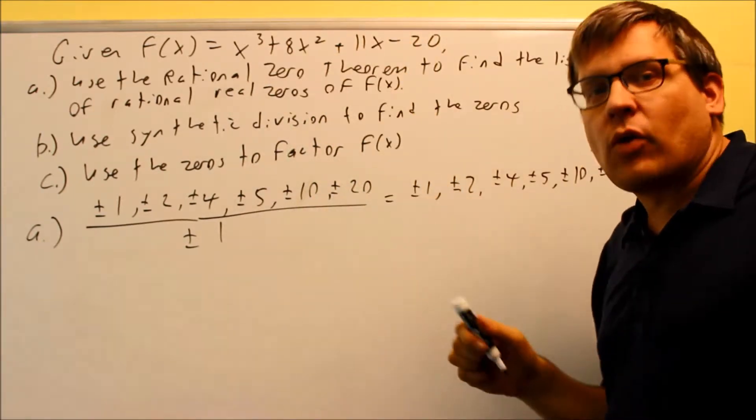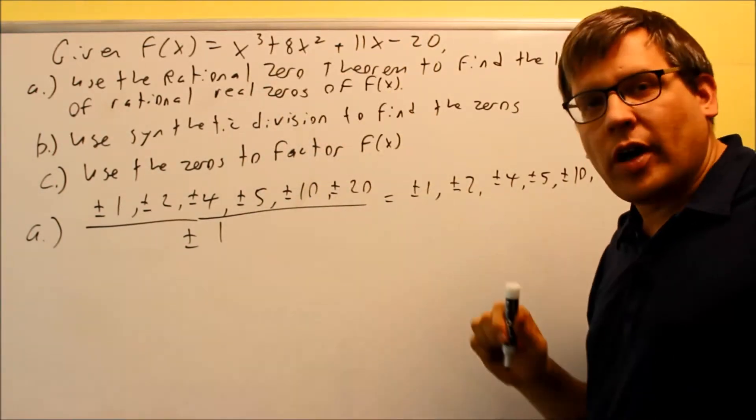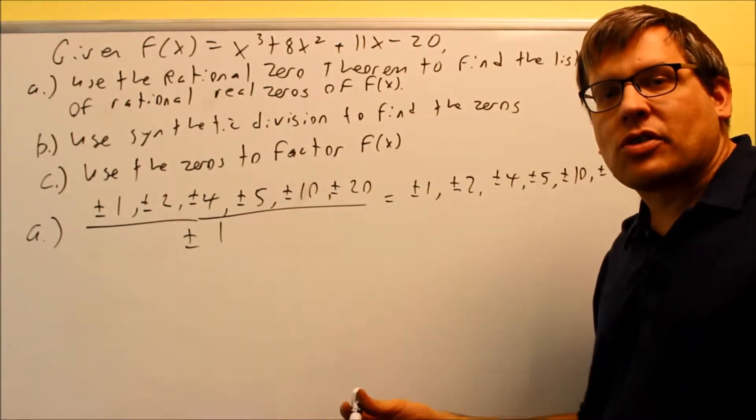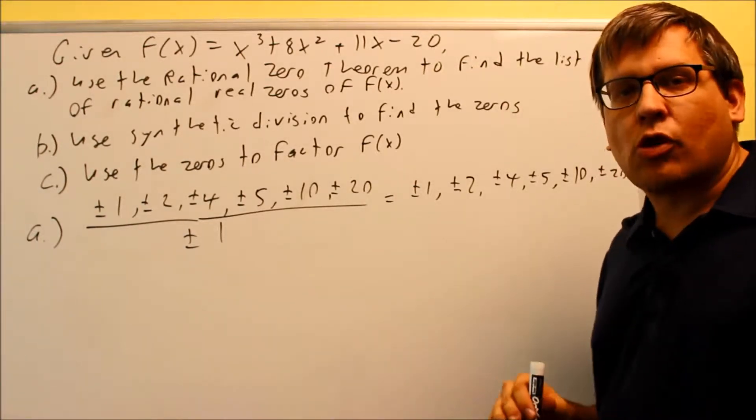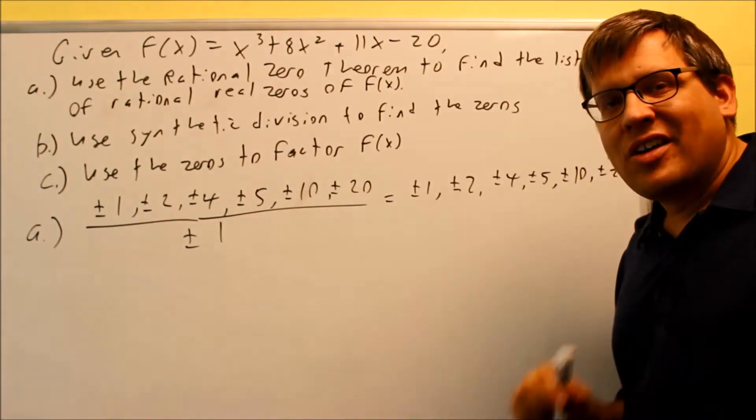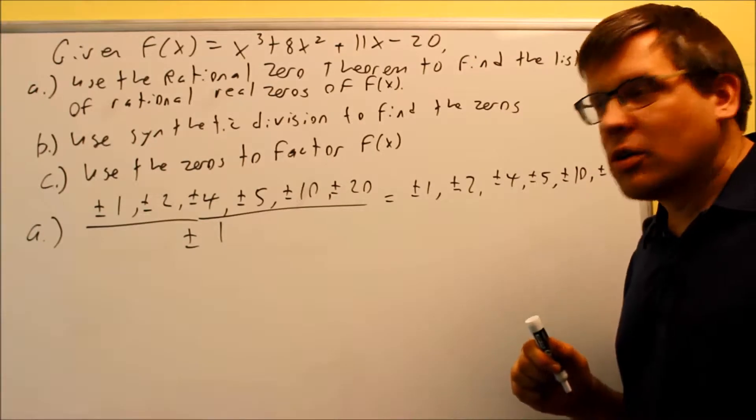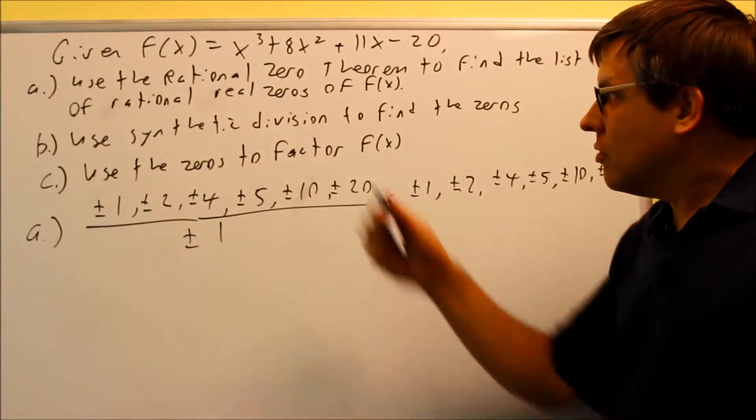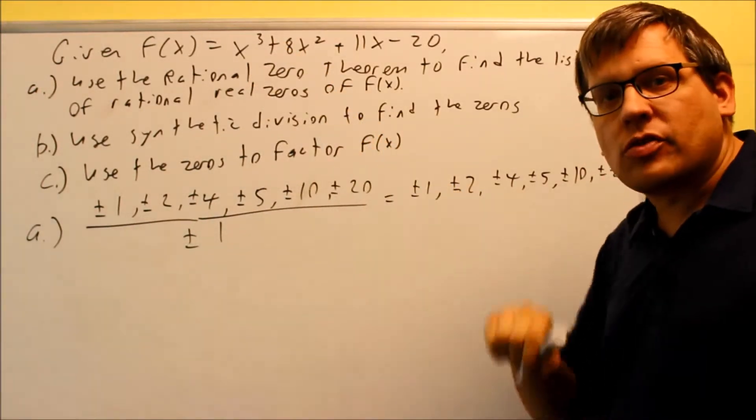We have to find at least one number that gives us a remainder of zero because this is a cube and I can't factor it in this form. However if I bring it down to an x squared then I have some more options. I can either factor it or I can use quadratic formula. So the idea here is you want to find at least one number that takes it down into a quadratic when I do synthetic division.